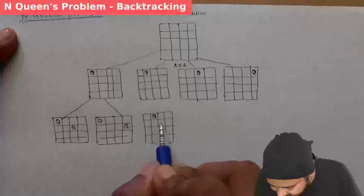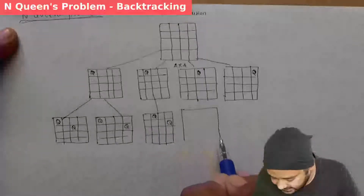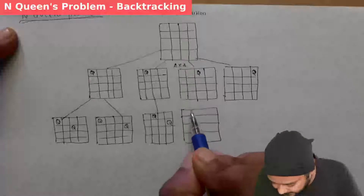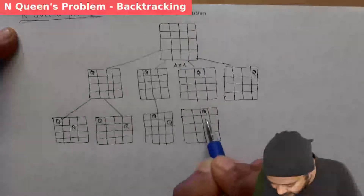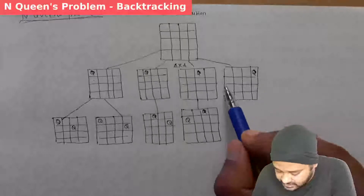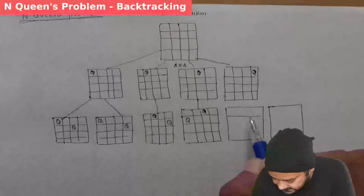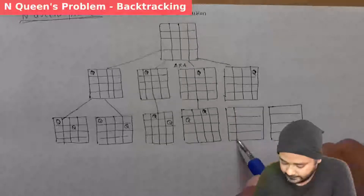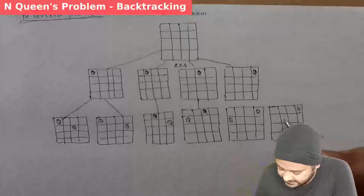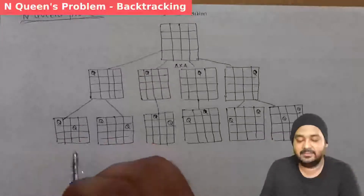With the queen placed, we continue to the next level. In some branches, we cannot place the queen in three different options, so there is only one placement. Moving further along the tree, some branches offer two options for placement and others only one. These are the two different opportunities for placing the second queen in certain branches. We now move on to placing the third queen.